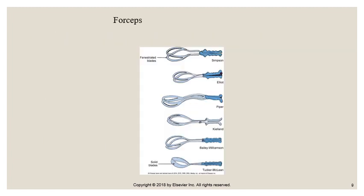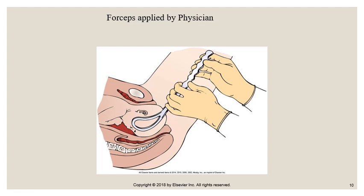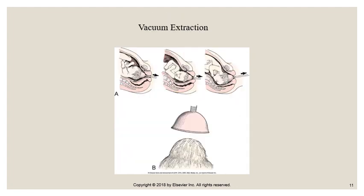Here are examples of forceps, including several types: Simpson, Elliot, Piper, Keelan, Bailey-Williamson, and Tucker-McLean. Here is the physician applying forceps — you can see how the curved blades are locked in position along the fetal head. This is a picture of vacuum extraction; you can see the chignon in letter B. Remember, vacuum extraction is not used at gestations prior to 34 weeks.